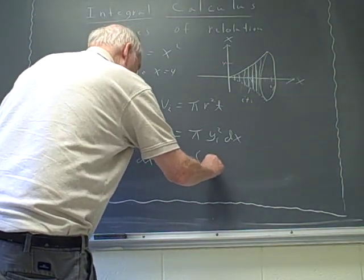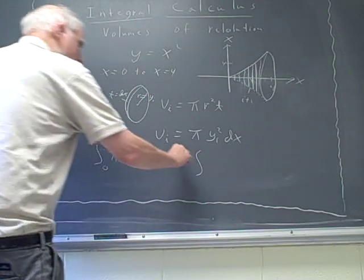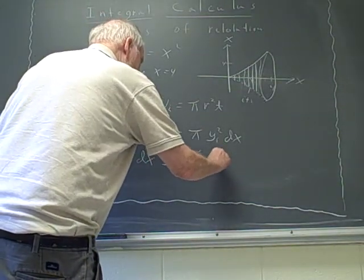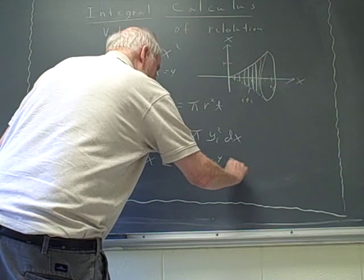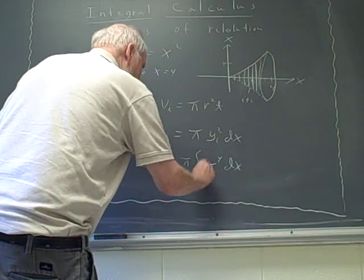So it is, and I can factor out the pi. We'll bring the pi out here. And it becomes x to the fourth dx from zero to four.